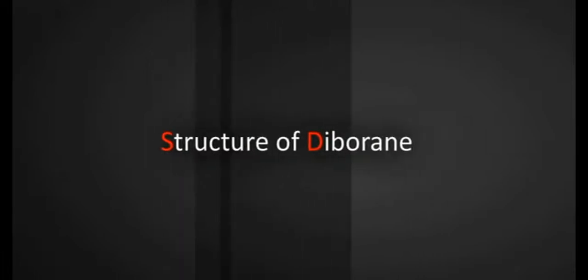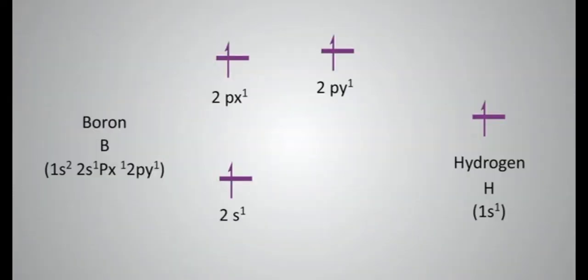Diborane. In the structure of diborane, boron atom in the excited state has the configuration 2s1, 2px1, 2py1.